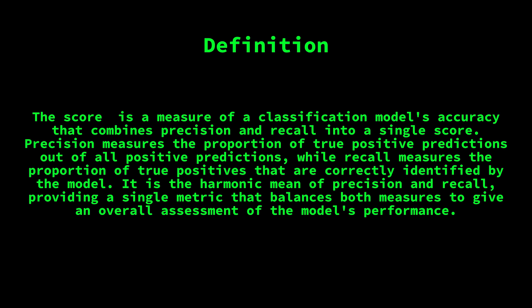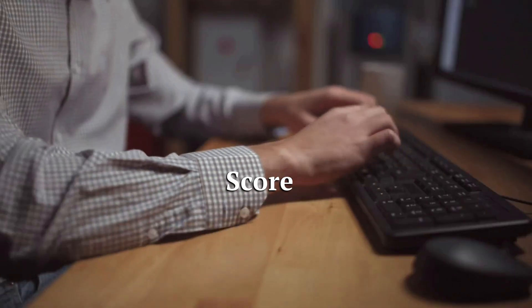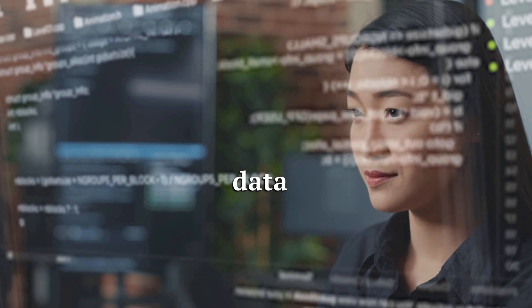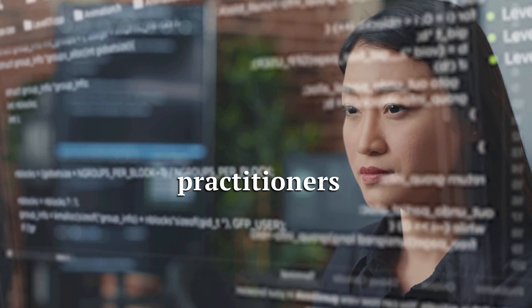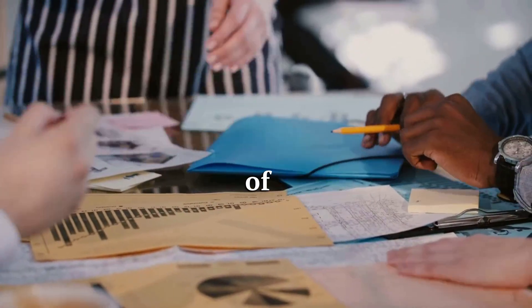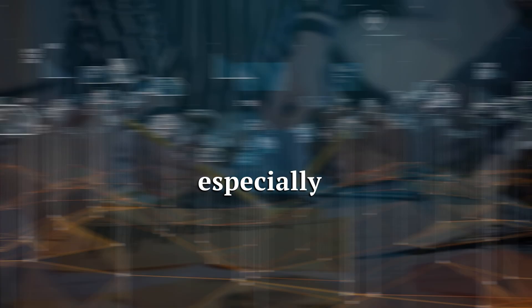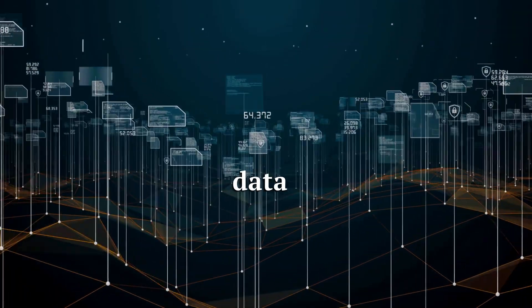It is the harmonic mean of precision and recall, providing a balanced metric for overall model performance. F1 score is important in machine learning because it allows practitioners to evaluate the effectiveness of their classification models, especially when dealing with imbalanced datasets.